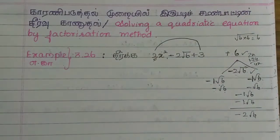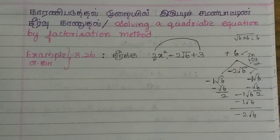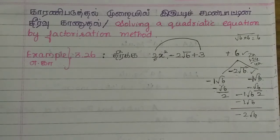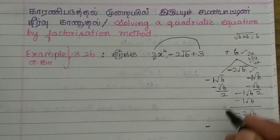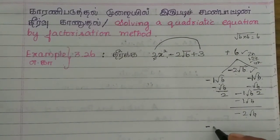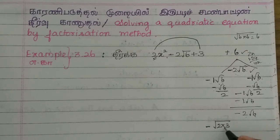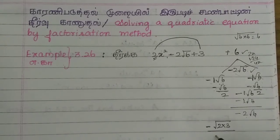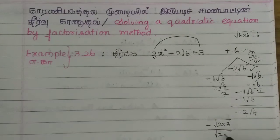Now x will take a coefficient. Let's divide. If there is 6, 2√6 is 6. √2, 3√6 by 2√2, 2√2.